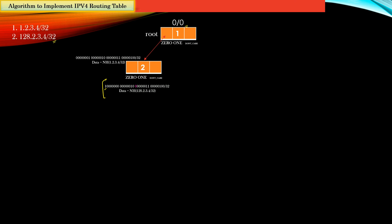Similarly, if you want to insert the route 128.x.x.x, quickly convert this route into its effective prefix form. Examine the first bit of this route, which is 1. The insertion of the route begins with the root node. We create a new node with node ID 3 and make this new node the 1st child of the root node. Node 3 will contain the effective prefix, prefix length, and data part accordingly. We have successfully inserted route number 2 into this mtrie data structure. We just scan the first bit of the effective prefix of the new route and based on that, insert a new child node as a child of the root node.